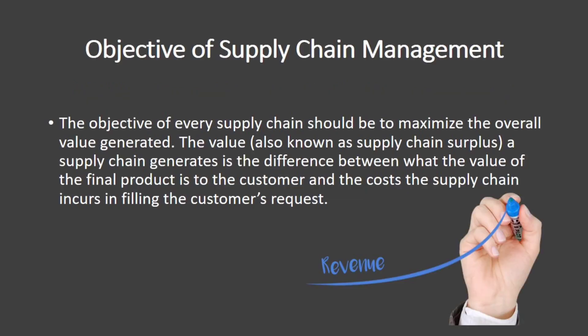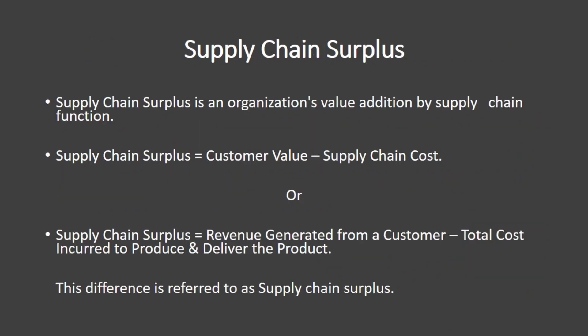The objective of every supply chain should be to maximize the overall value generated. The value a supply chain generates is the difference between what the value of the final product is to the customer and the cost the supply chain incurs in filling the customer's request. Supply chain surplus is an organization's value addition by the supply chain function.